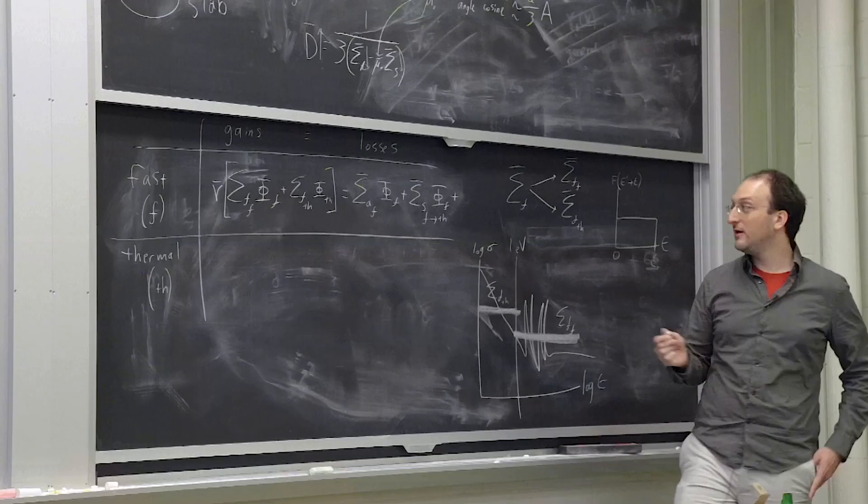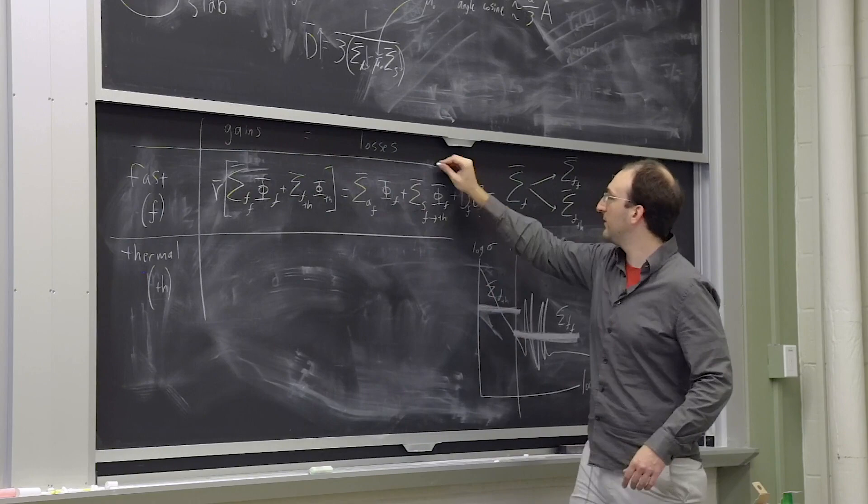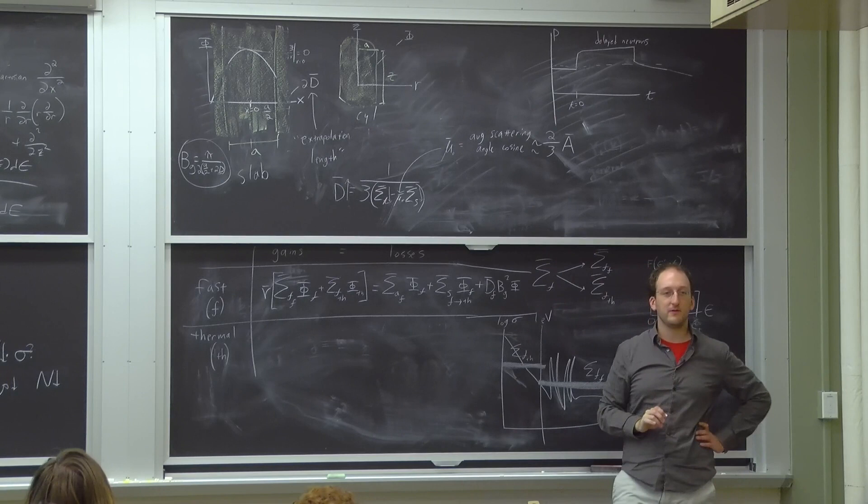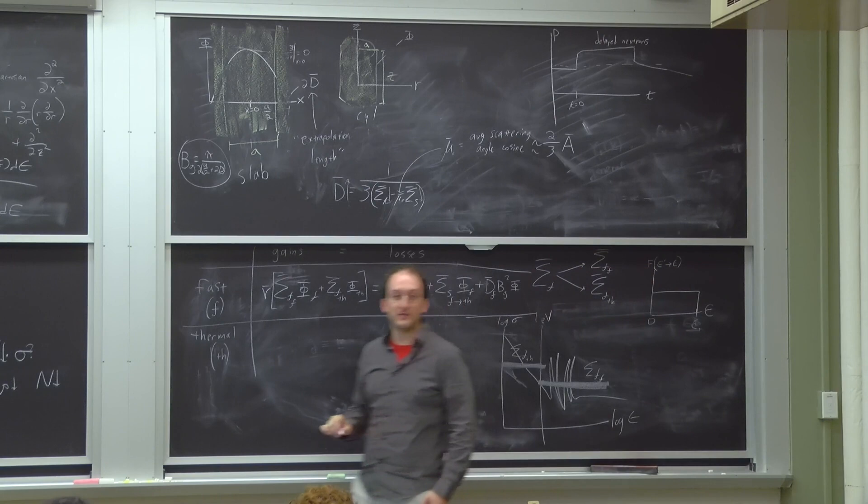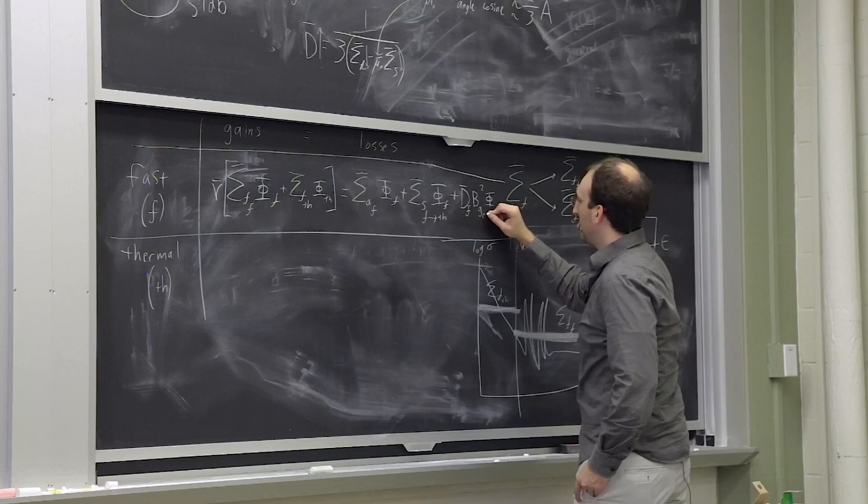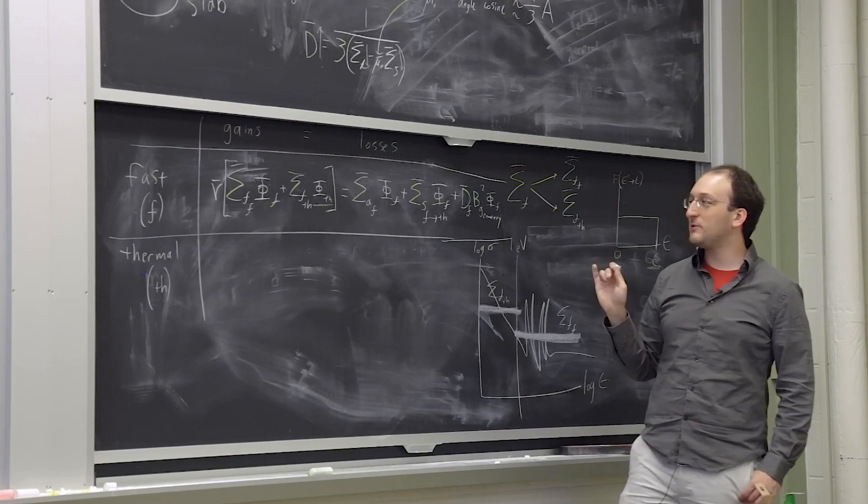Not every scattering event will cause the neutron to leave the fast group, but some of them will. And last, what other way can we lose neutrons from the fast group? Leakage. They can leave the reactor. We can write that as d fast BG squared flux. Now, using the same sort of logic, let's write the gains and losses in the thermal group. What is the only source of neutrons into the thermal energy group?